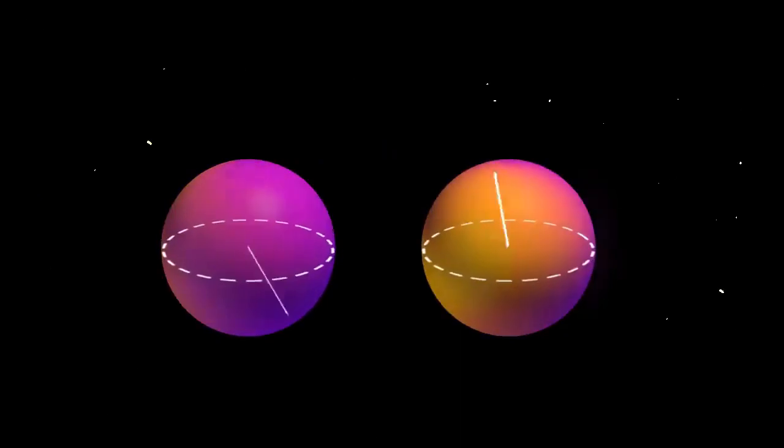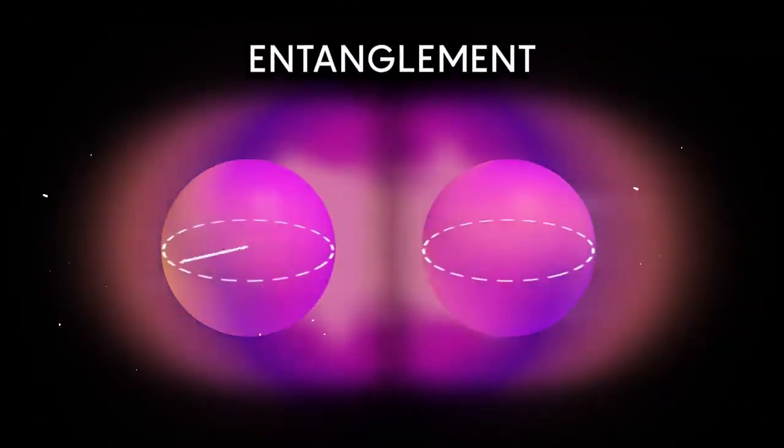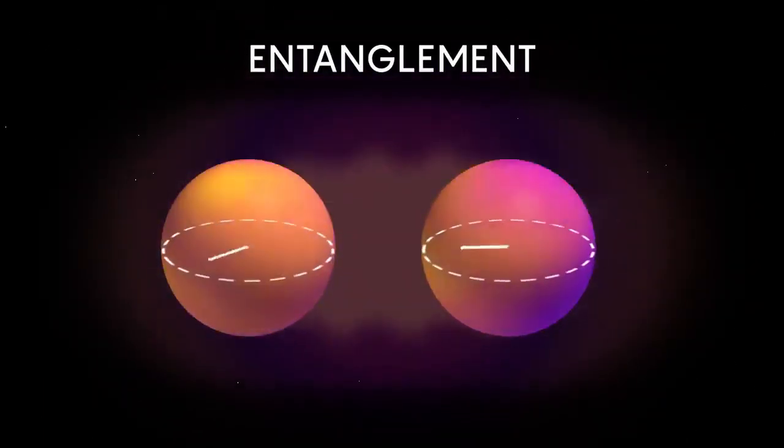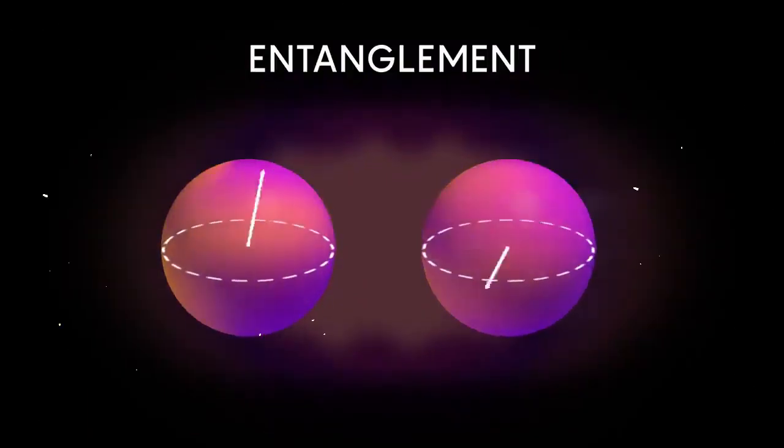Superposition is just the beginning of the weirdness of quantum mechanics. Another important principle is entanglement. Entanglement occurs when two particles become linked in such a way that their states are no longer independent. If you measure the state of one particle, it immediately affects the state of the other, no matter how far apart they are. This is a phenomenon that Albert Einstein called spooky action at a distance.